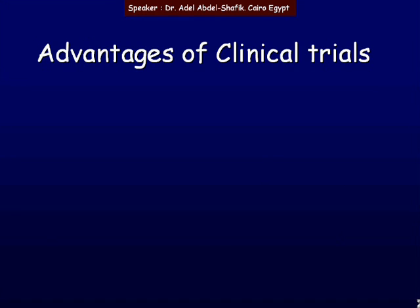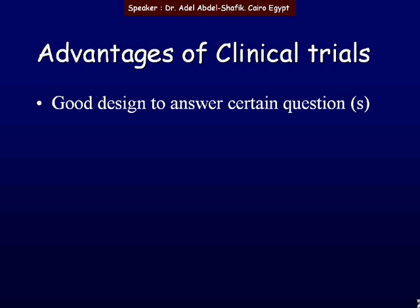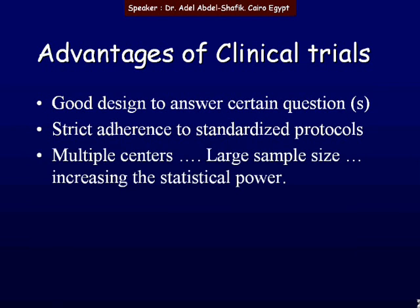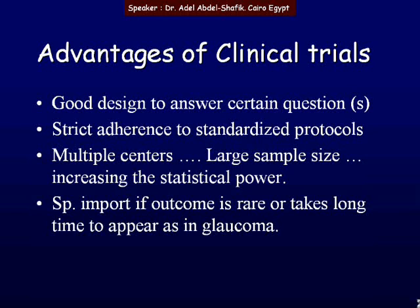What are the advantages of a clinical trial? A good clinical trial should have a good design to answer certain questions, with strict adherence to standardized protocols, so it can be applied on multiple centers. Thus, we have a large sample size. This will increase the statistical power of the outcome. This is especially important if the outcome is rare or takes a long time to appear, as in glaucoma.